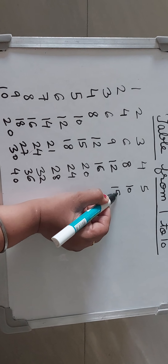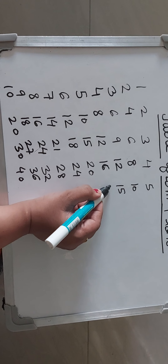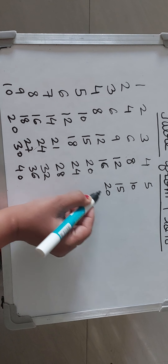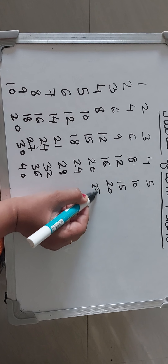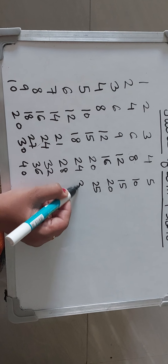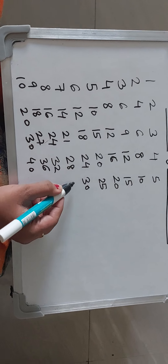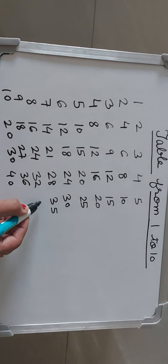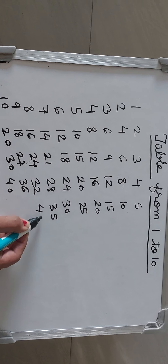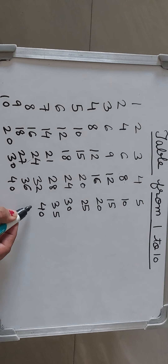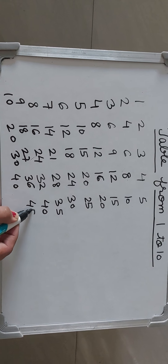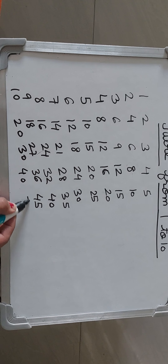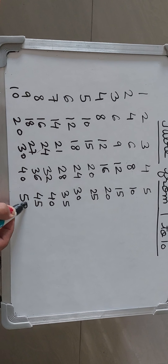Table of 5. 5 1s are 5, 5 2s are 10, 5 3s are 15, 5 4s are 20, 5 5s are 25, 5 6s are 30, 5 7s are 35, 5 8s are 40, 5 9s are 45, and 5 10s are 50.